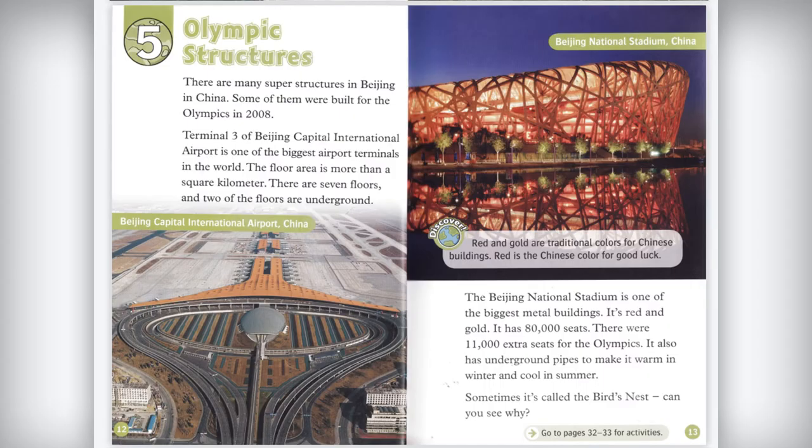There are many superstructures in Beijing, China. Some of them were built for the Olympics in 2008. Terminal 3 of Beijing Capital International Airport is one of the biggest airport terminals in the world. The floor area is more than a square kilometer. There are seven floors, and two of them are underground.